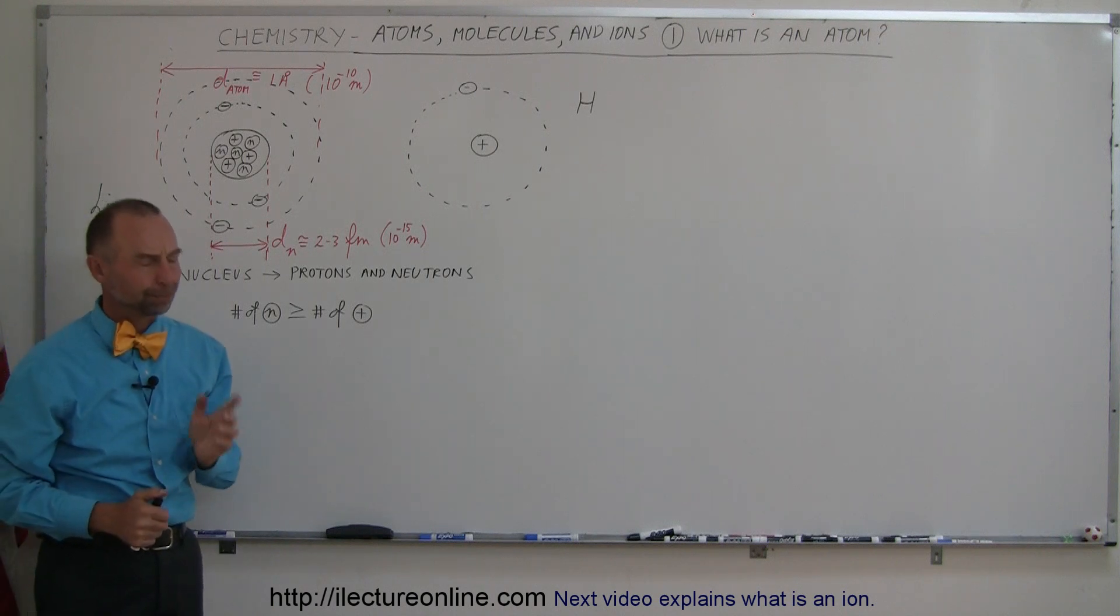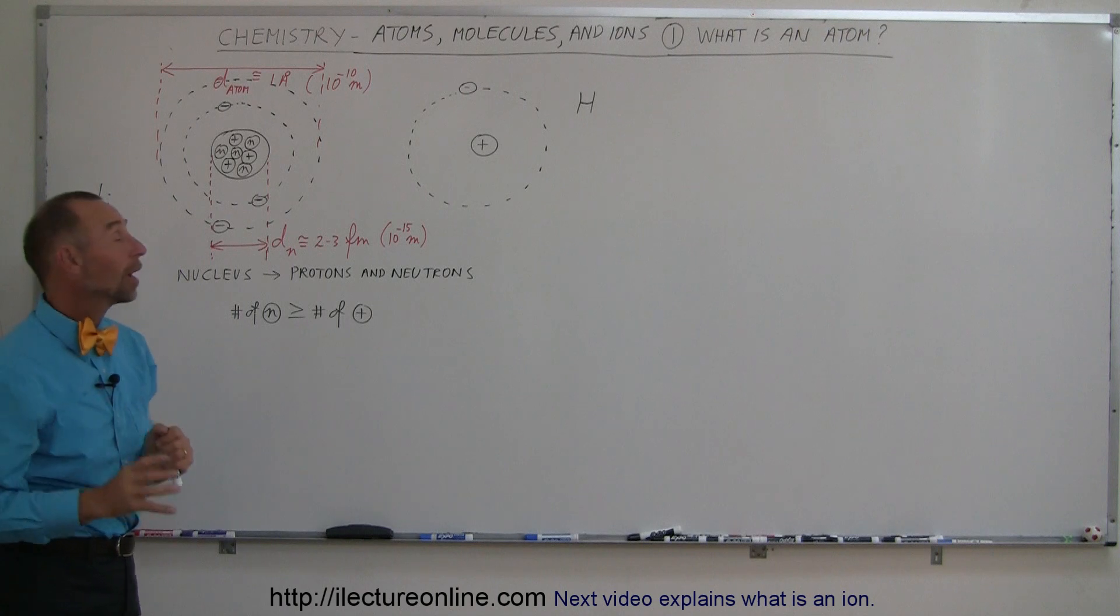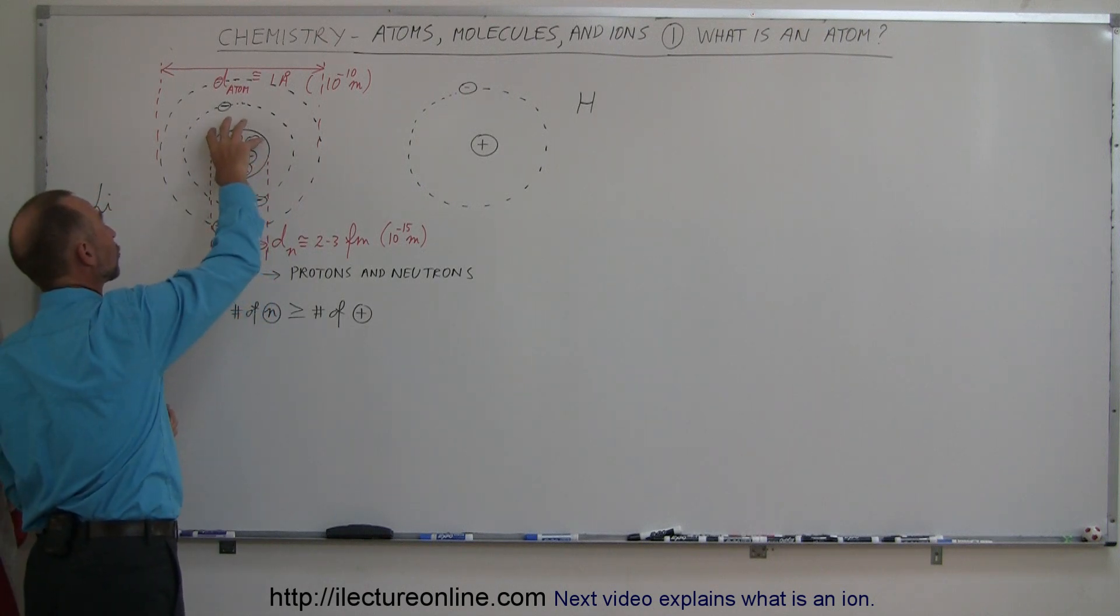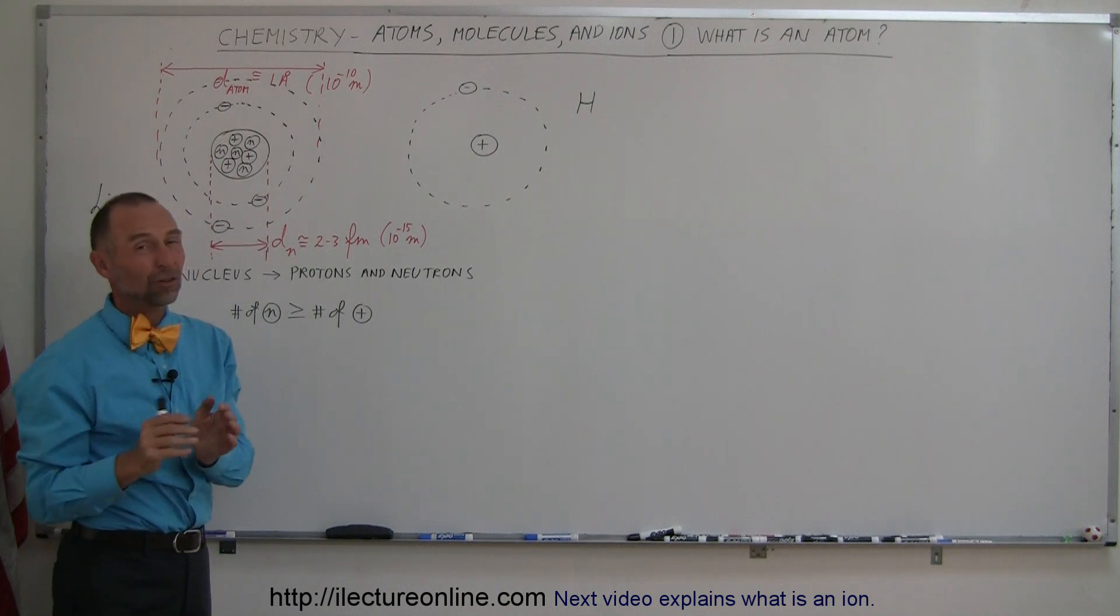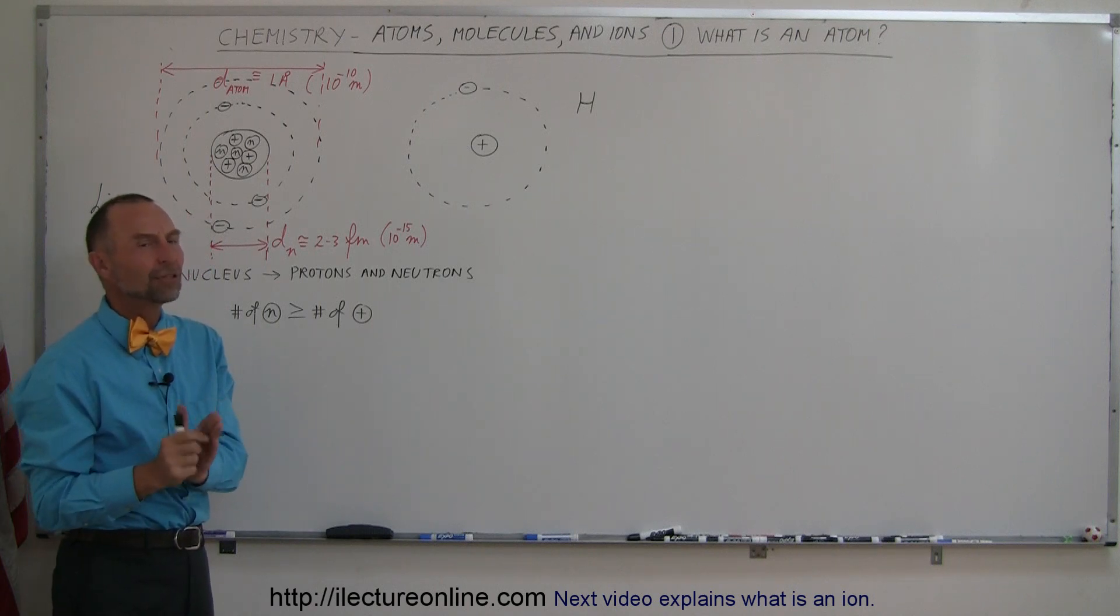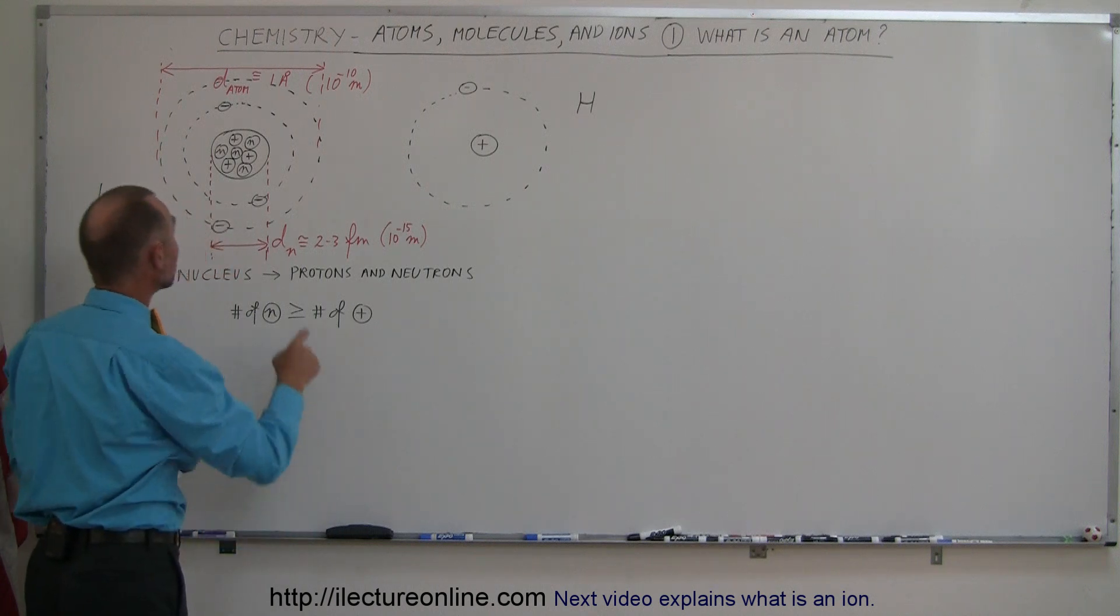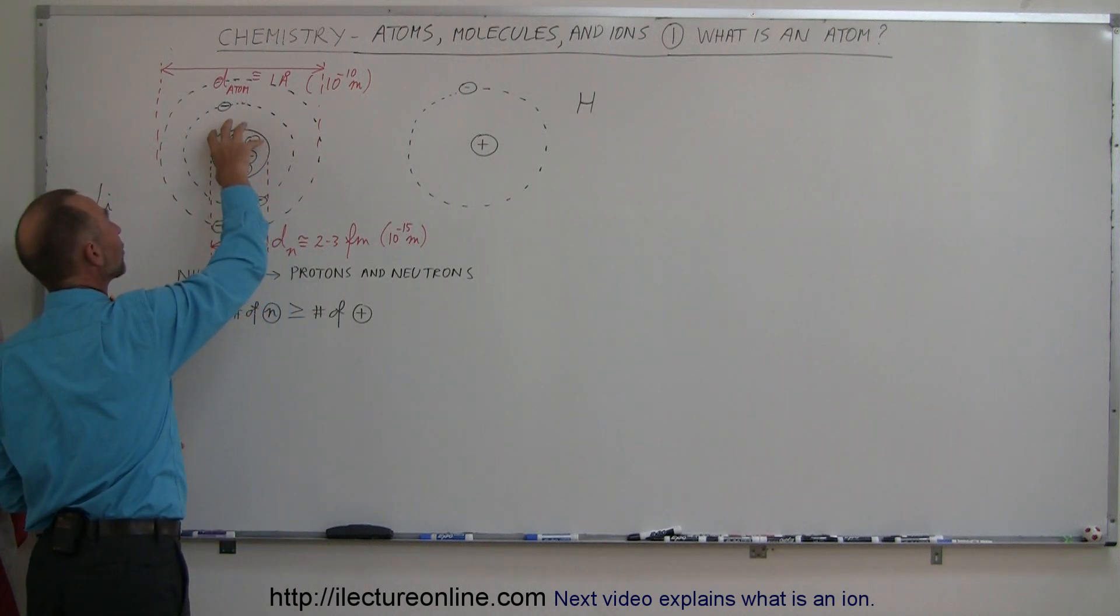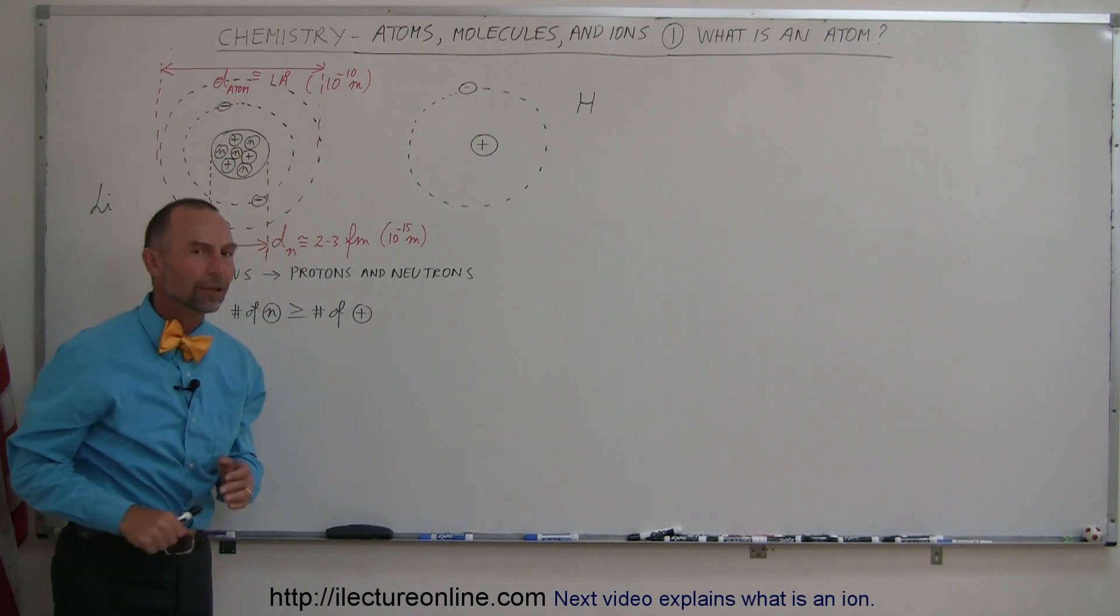Mass-wise, the vast majority of the mass is right here in the nucleus. The electrons have virtually no mass. Roughly speaking, the mass of a proton is about 2,000 times the mass of an electron, which means that more than 99.9% of the mass of an atom is in its nucleus and almost no mass resides in the electrons around it.